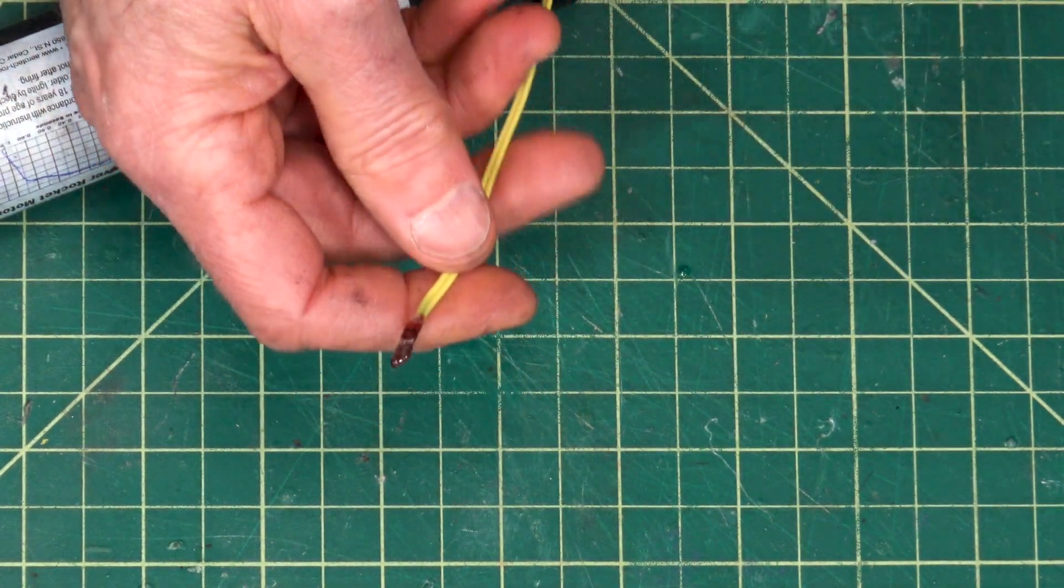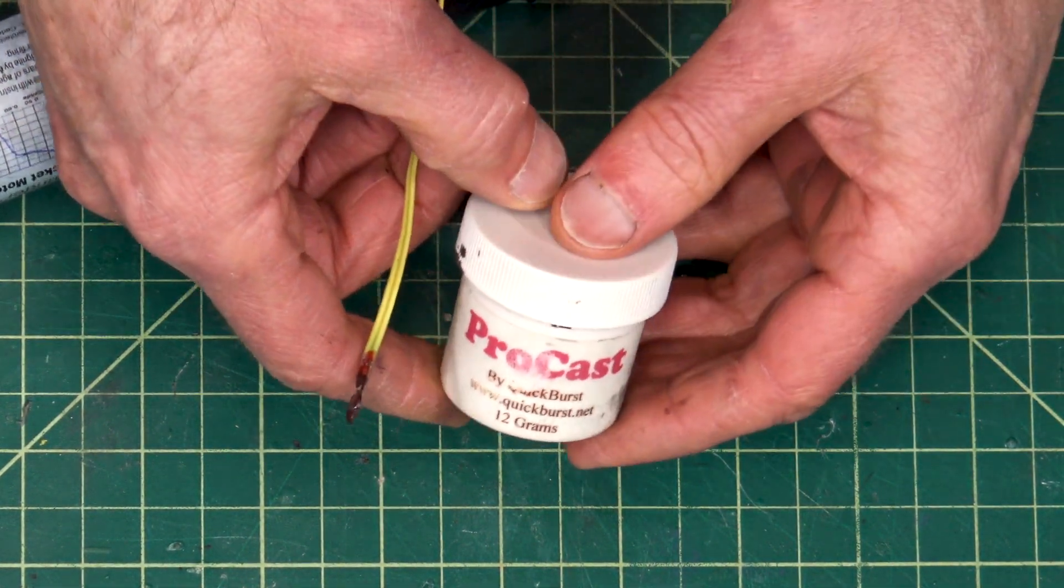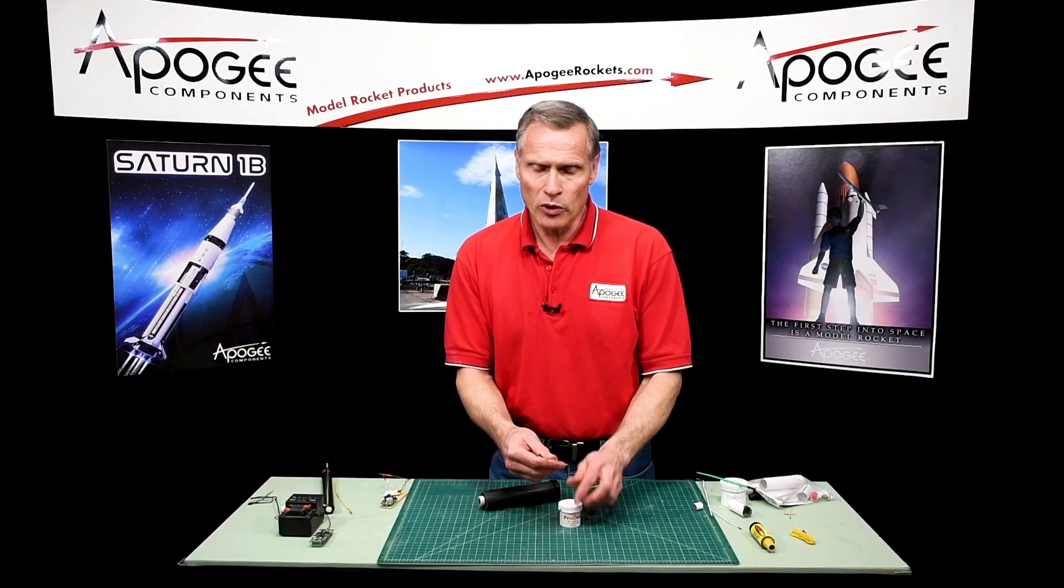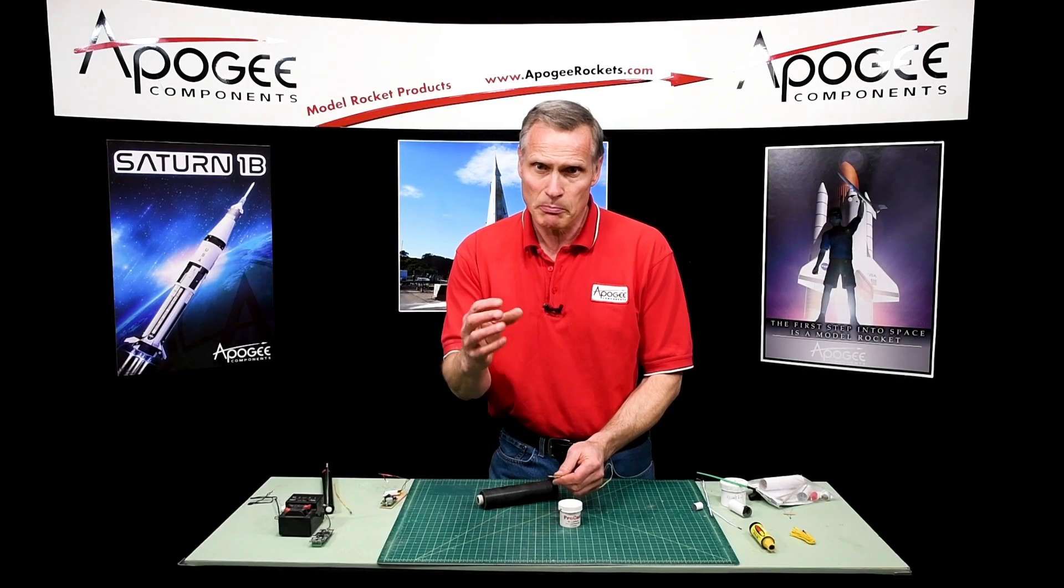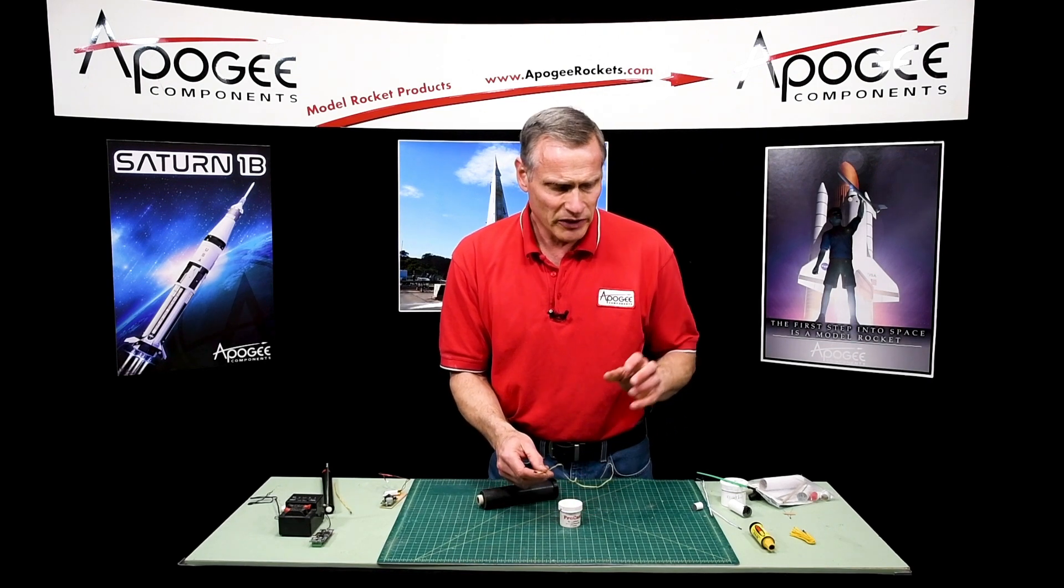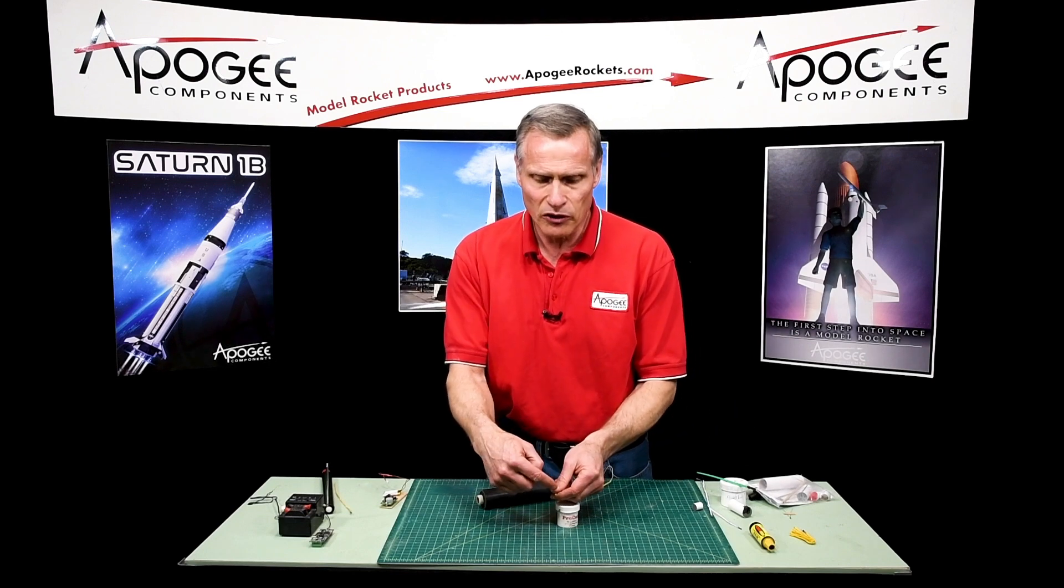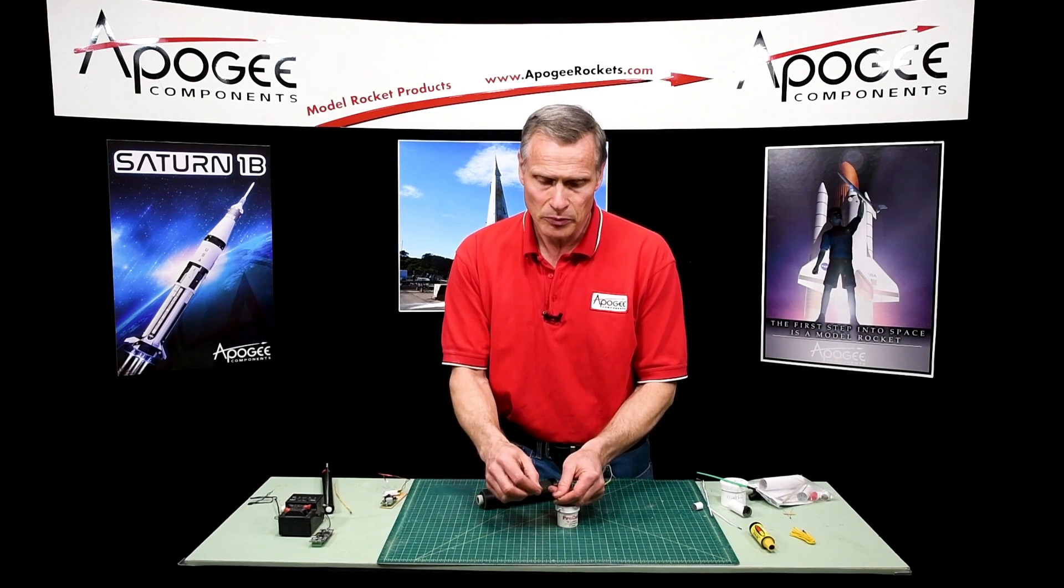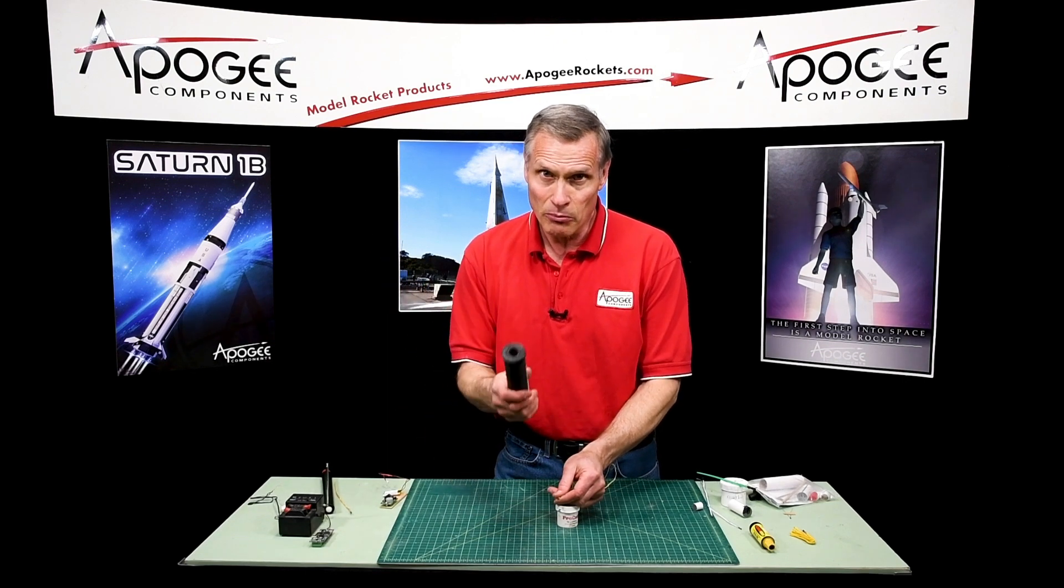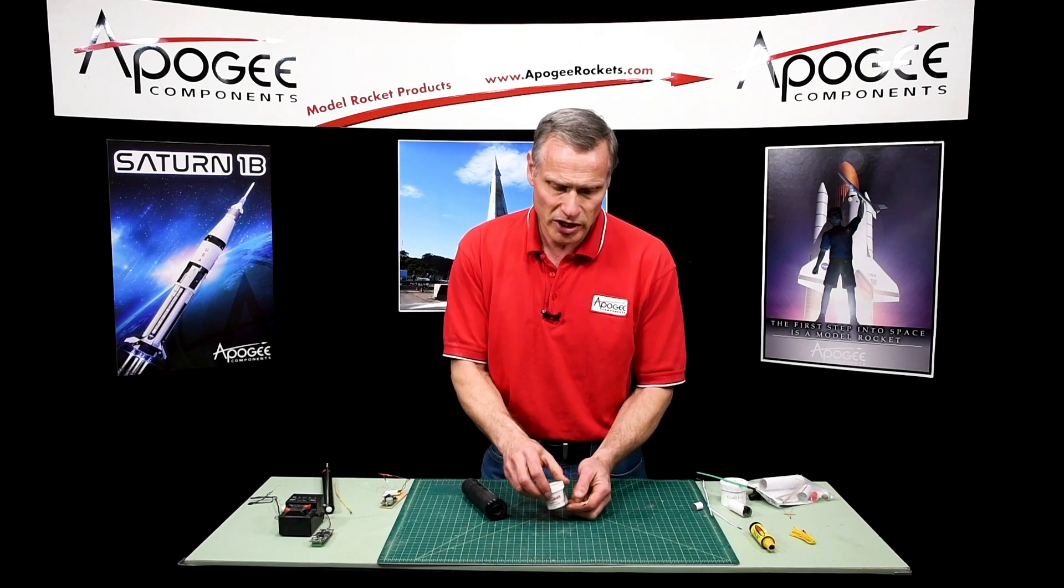And now for that you don't want to use the quick burst you want to use the Procast because these e-matches when they pop they just pop like that but they don't release a lot of heat and the heat that they release is not enough or if you painted it on the igniter it would just pop it right off without igniting it without the motor igniting.